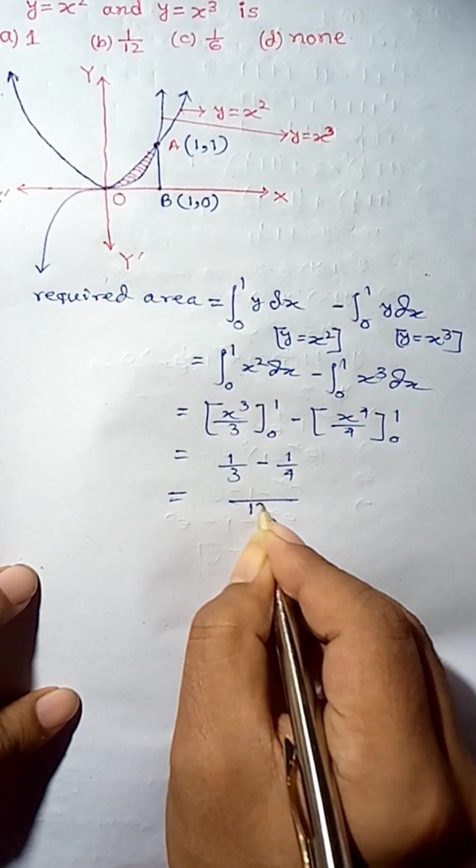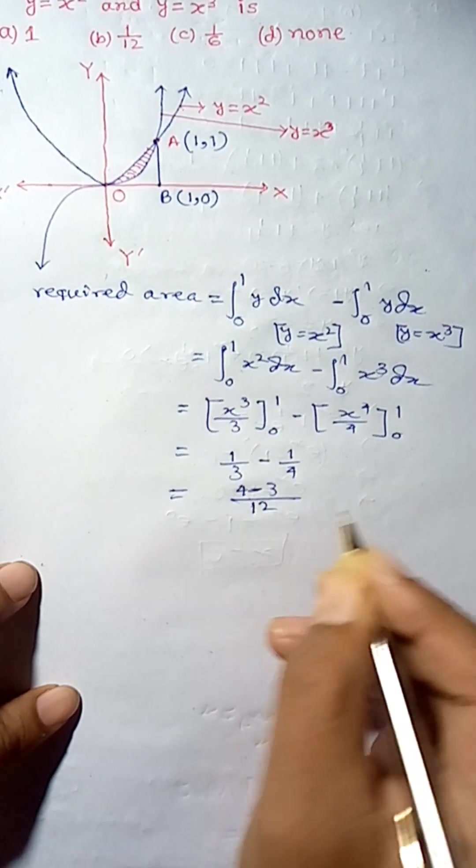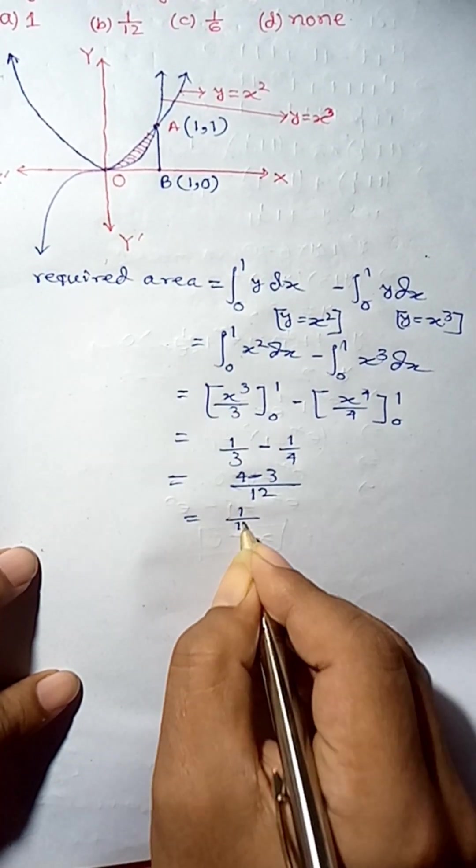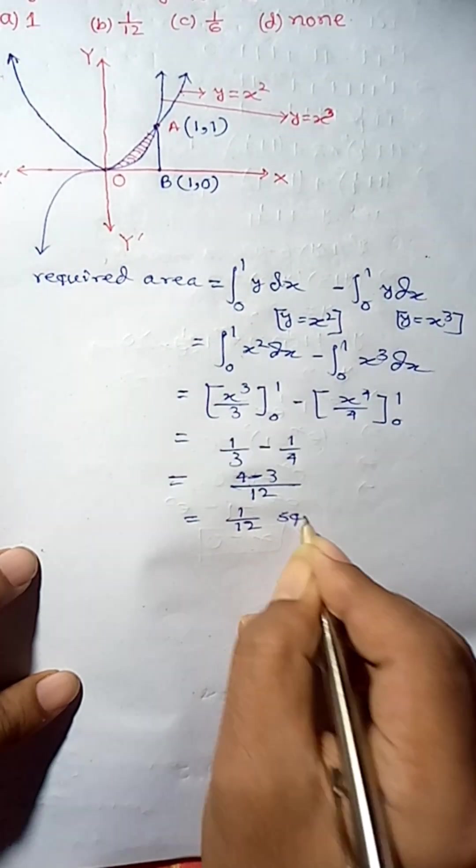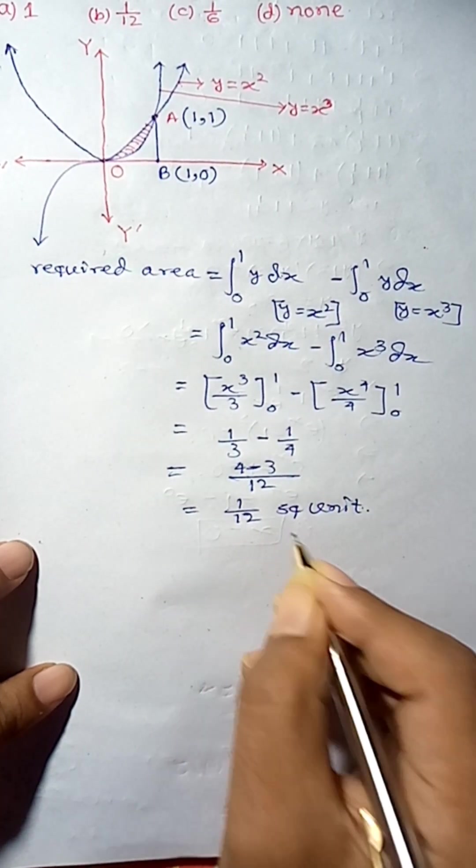So, this is going to be 12, 4 minus 3. So, this is 1 upon 12 square unit. So, this is the required area.